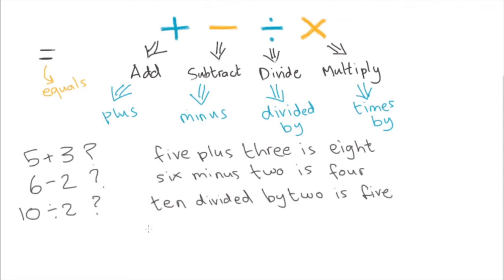And the last one, for the multiply sign. We're going to use times by. What is six times by three? Six times by three is... Correct. The answer is eighteen. Six times by three is eighteen.